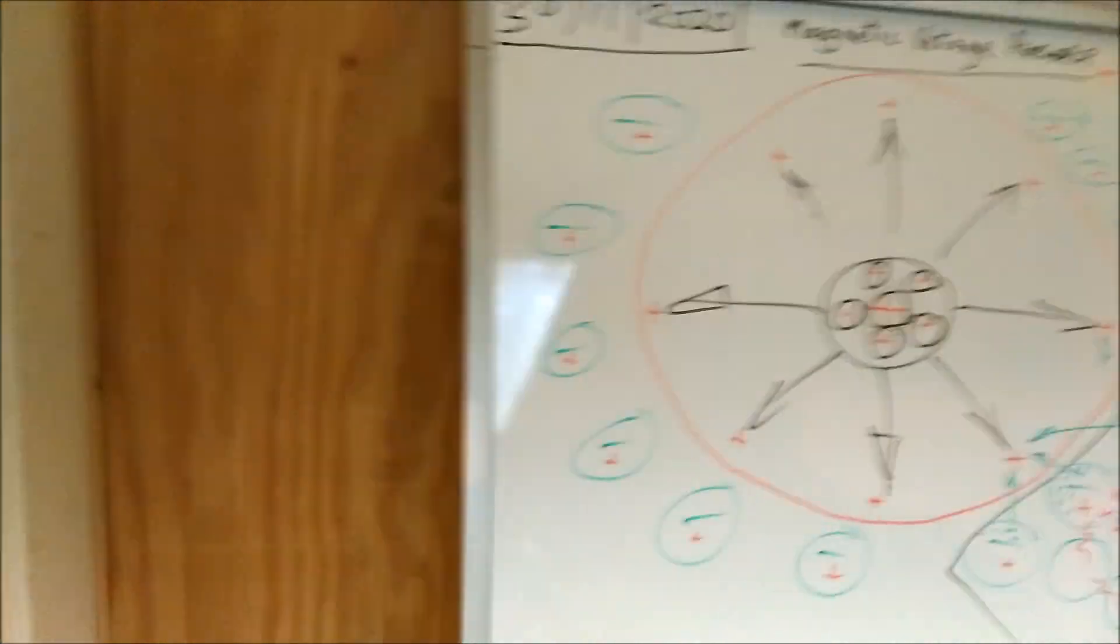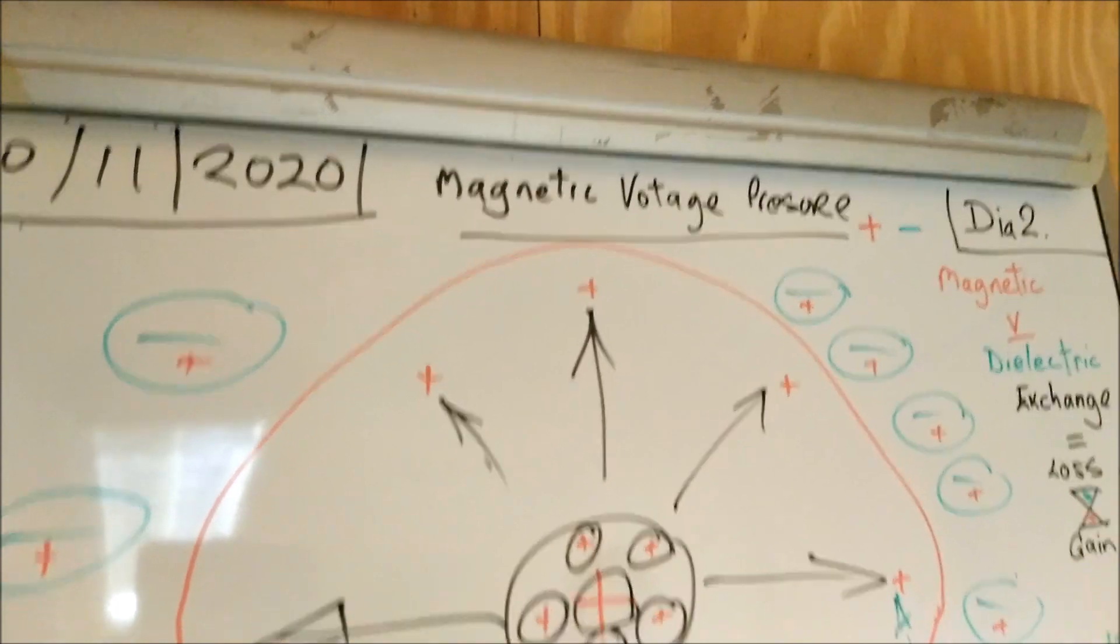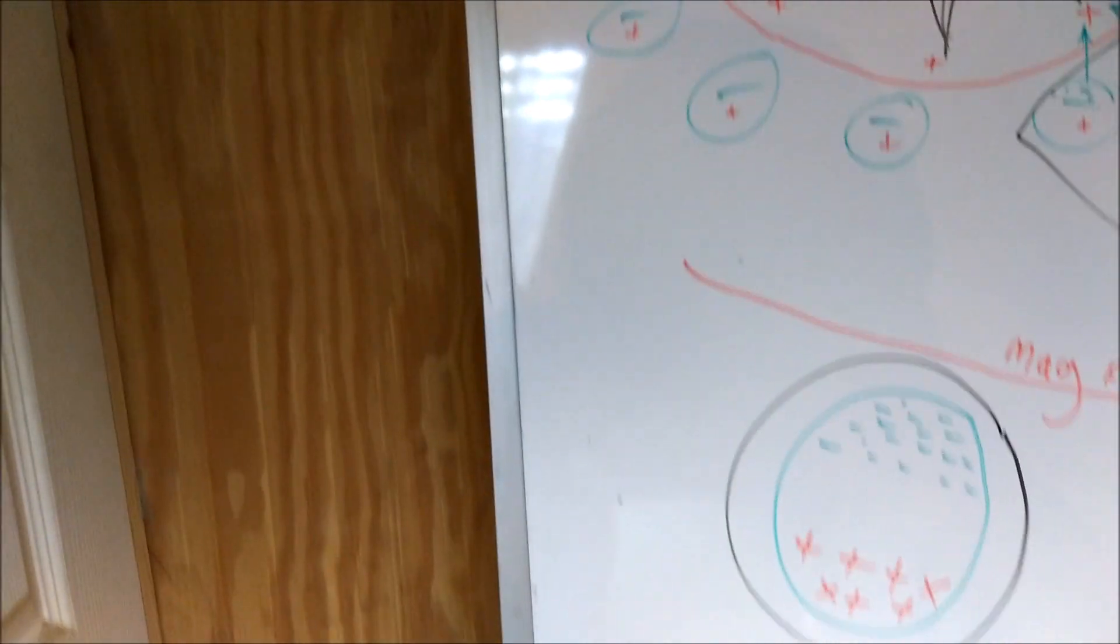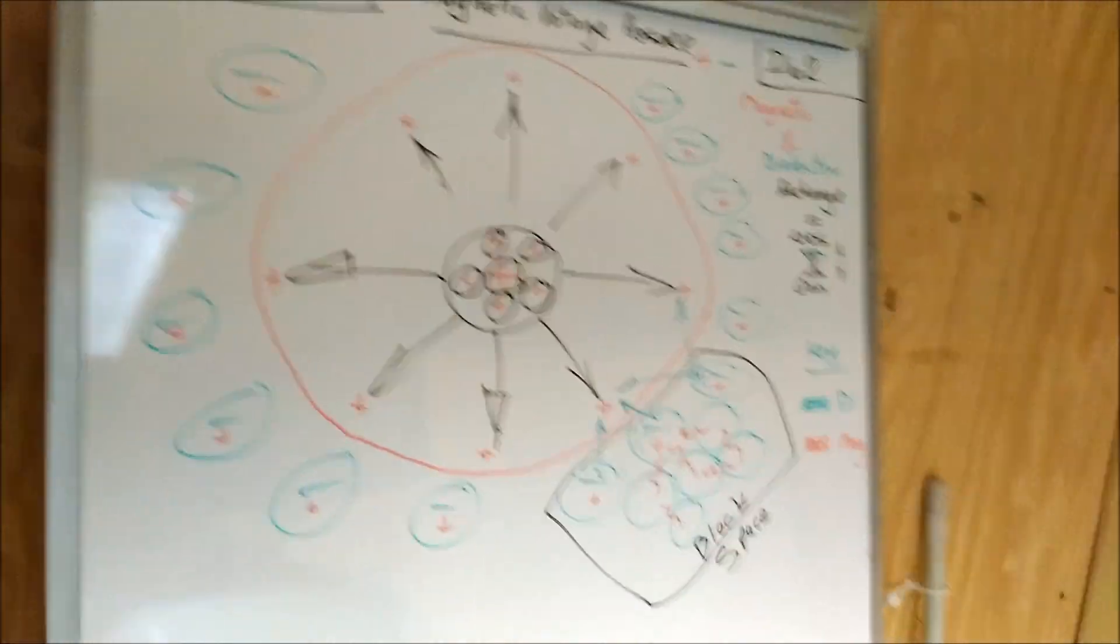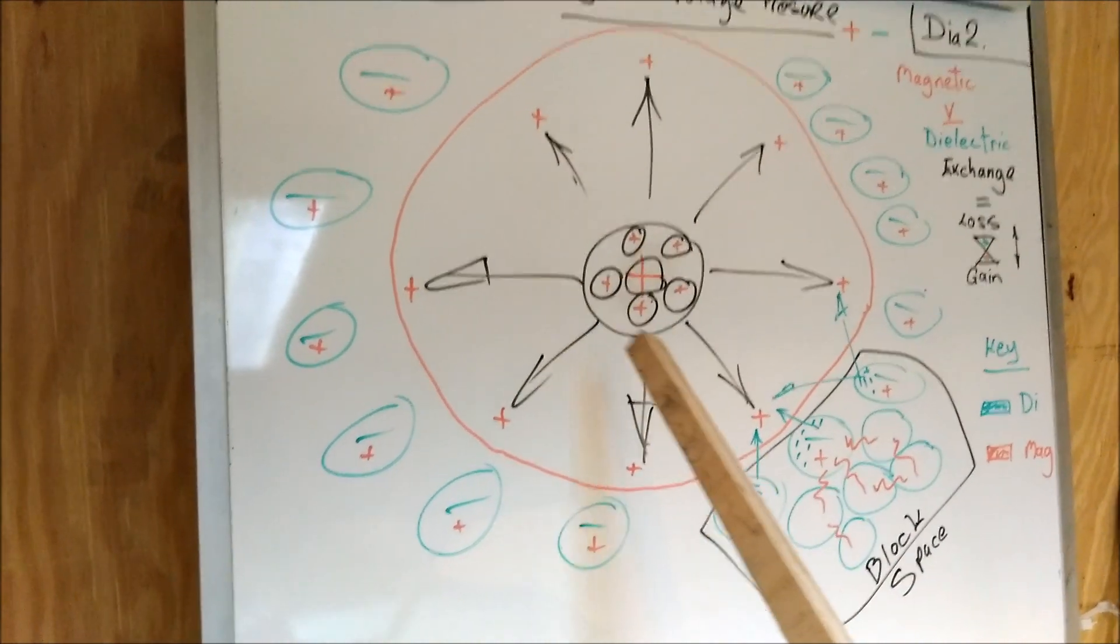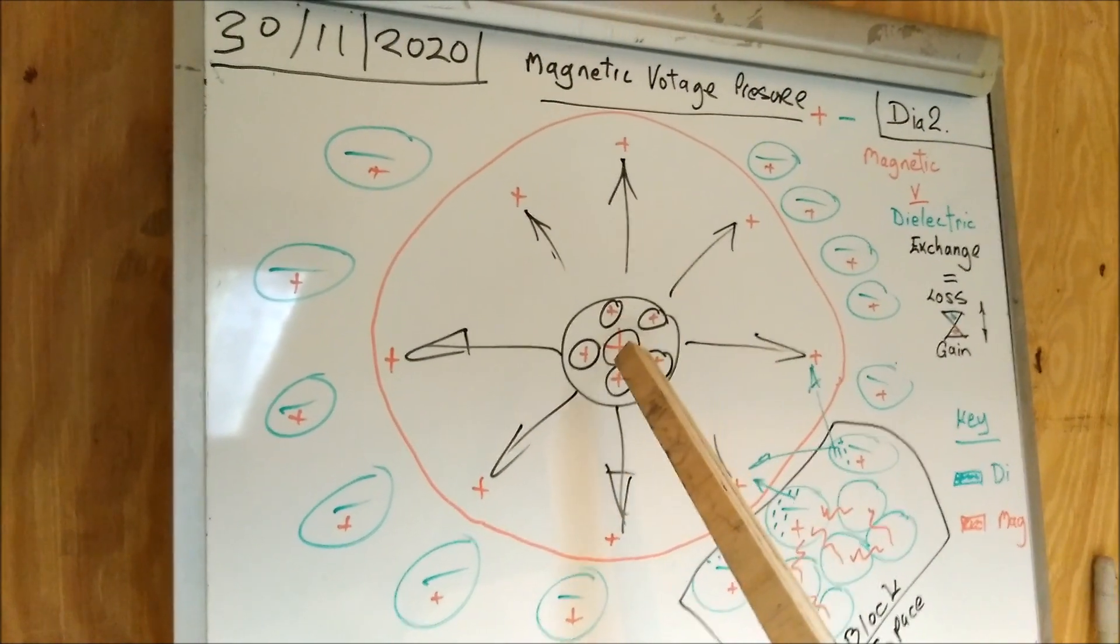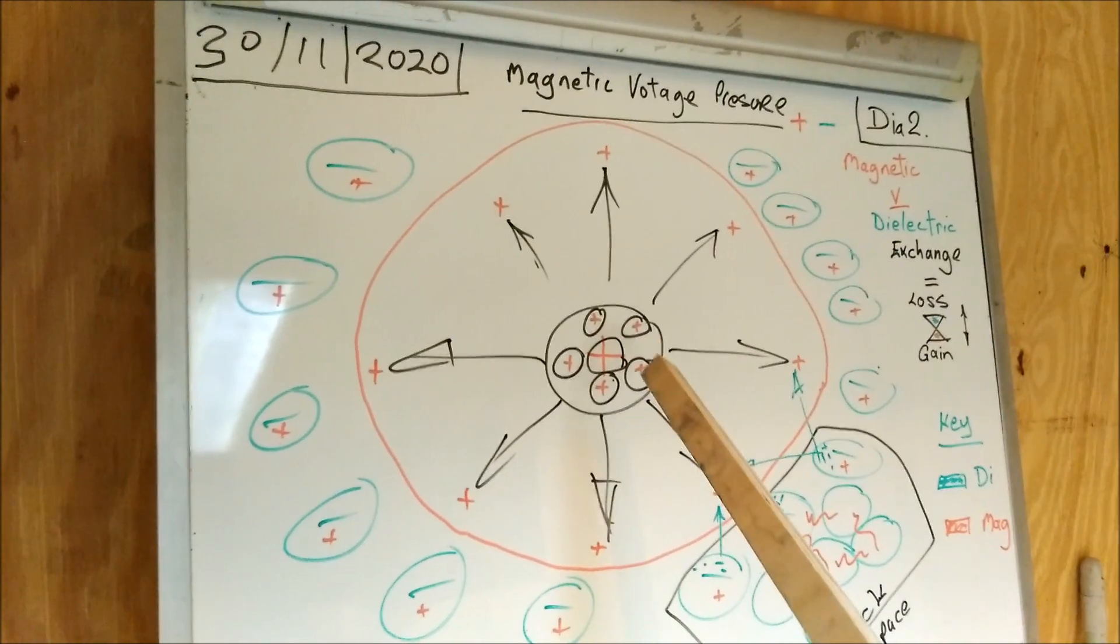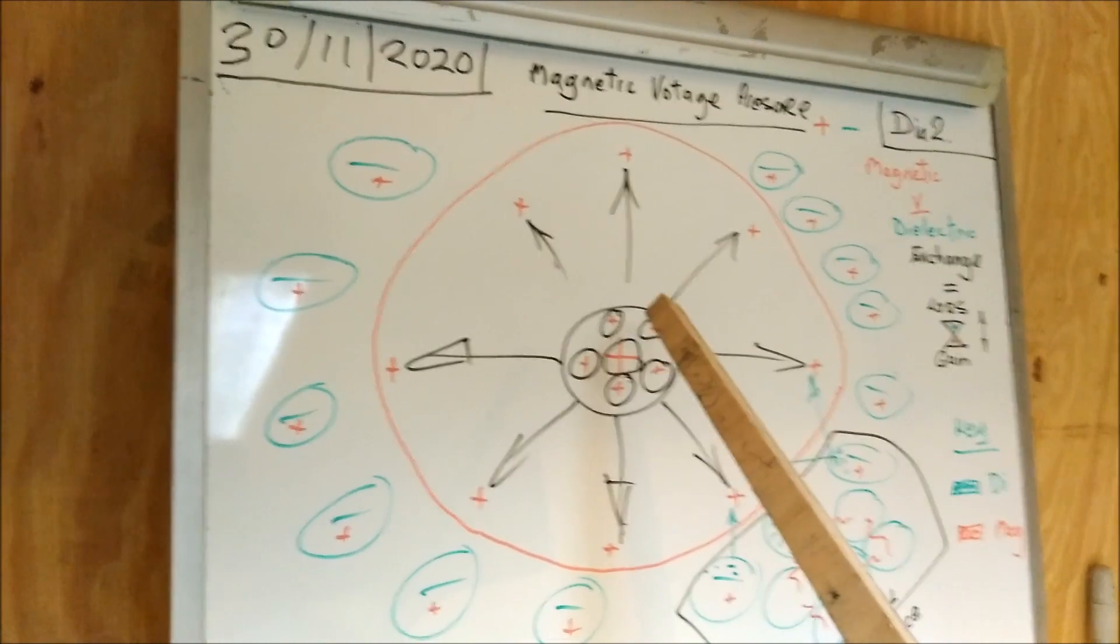So today we're looking at magnetic voltage pressure. What we've got here on the schematics is my autogen, which I'll show you in a minute - the steel scaffold tubes and the fluorescent tube going through the middle in which I fire 30,000 volts through the scaffold tube.